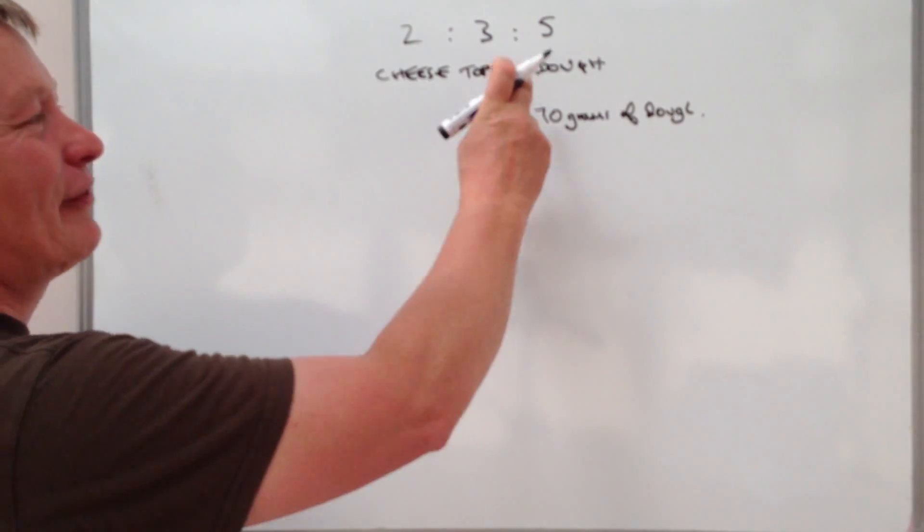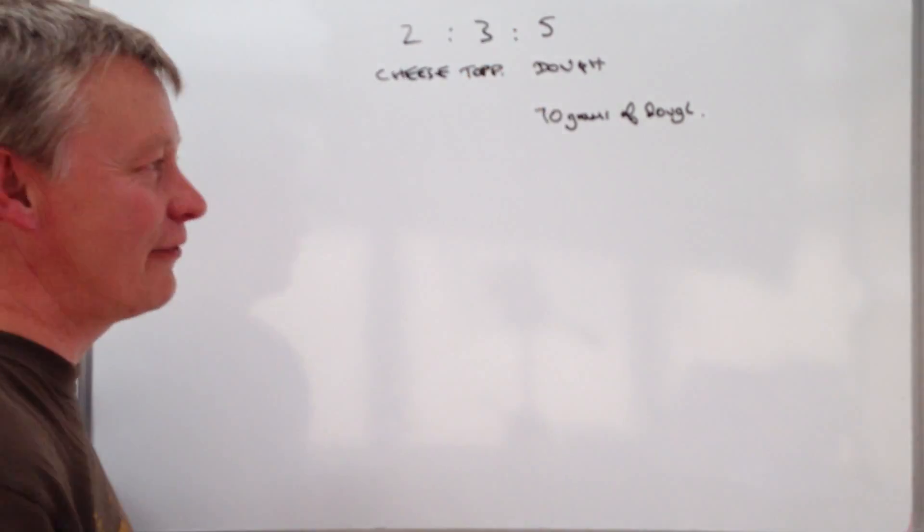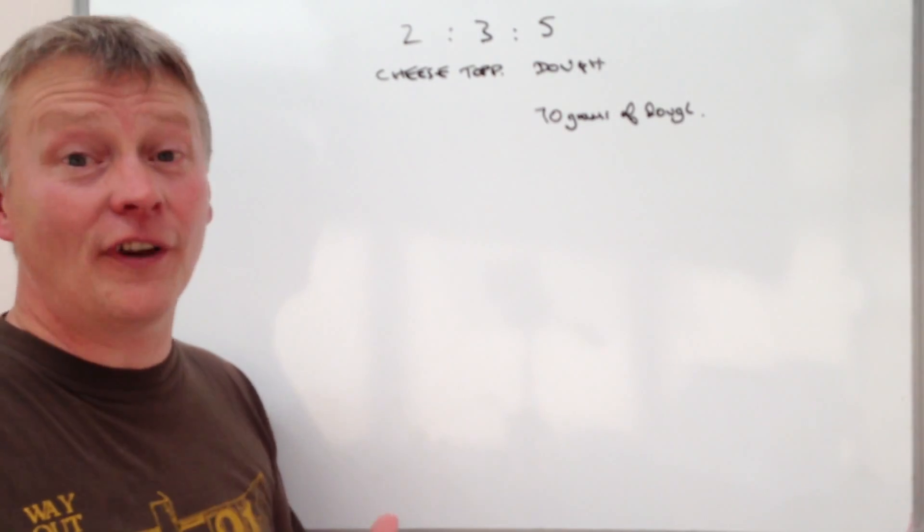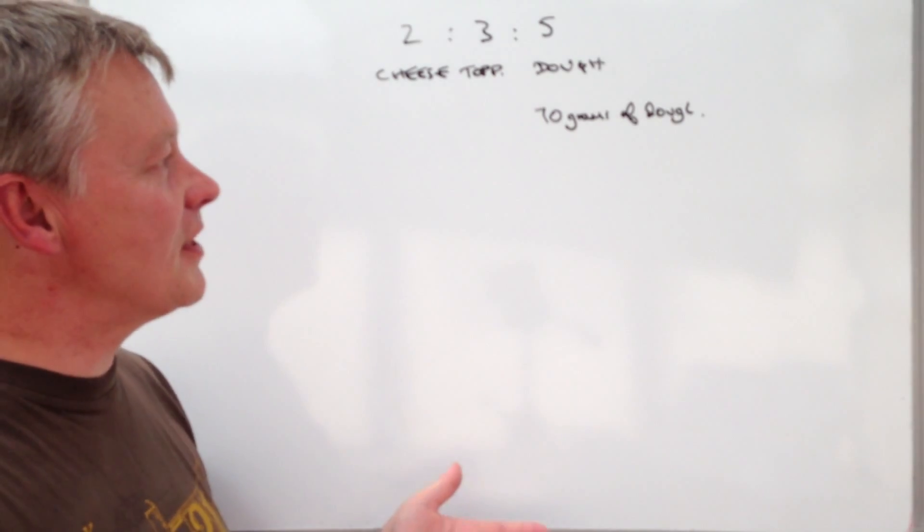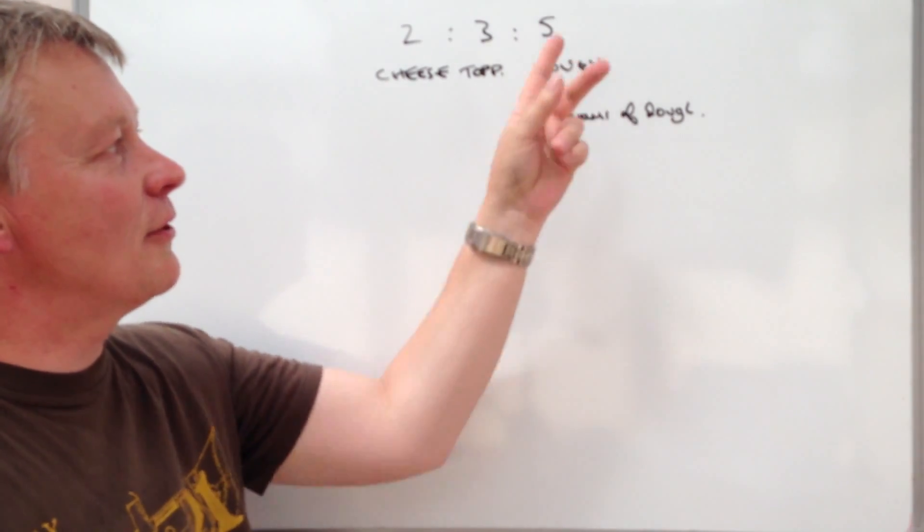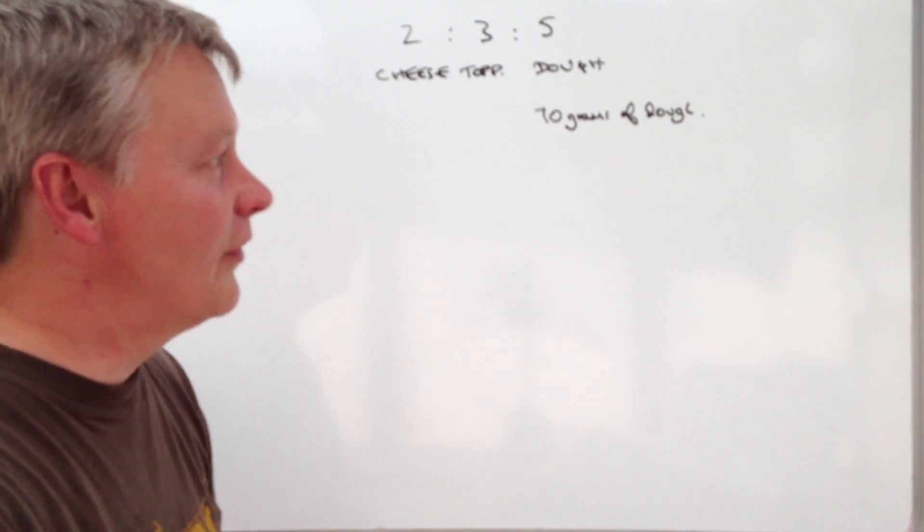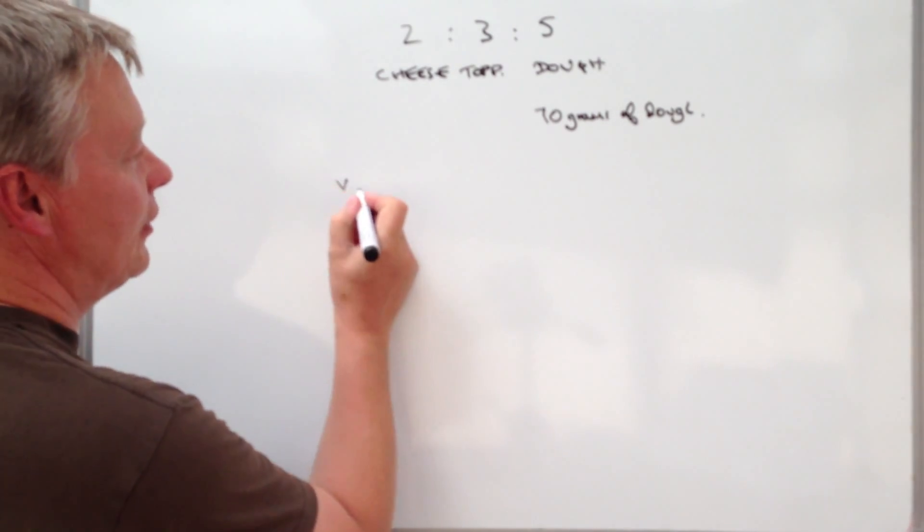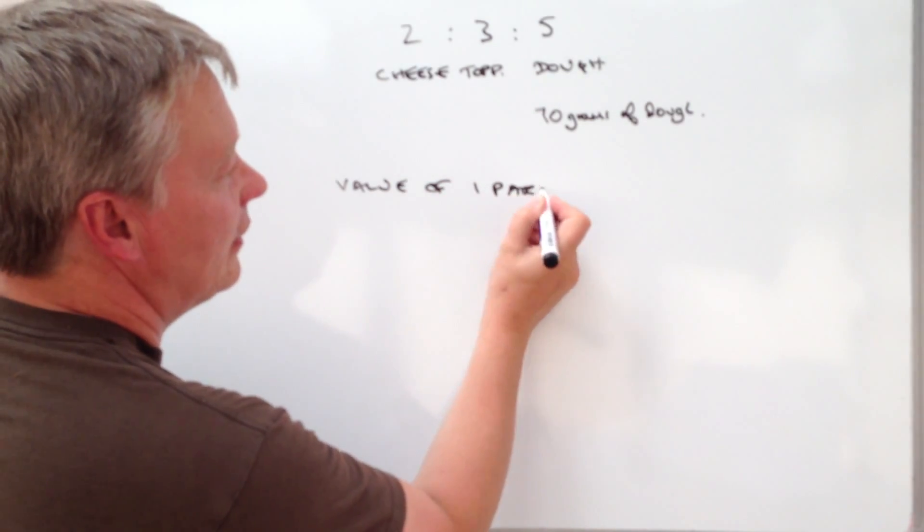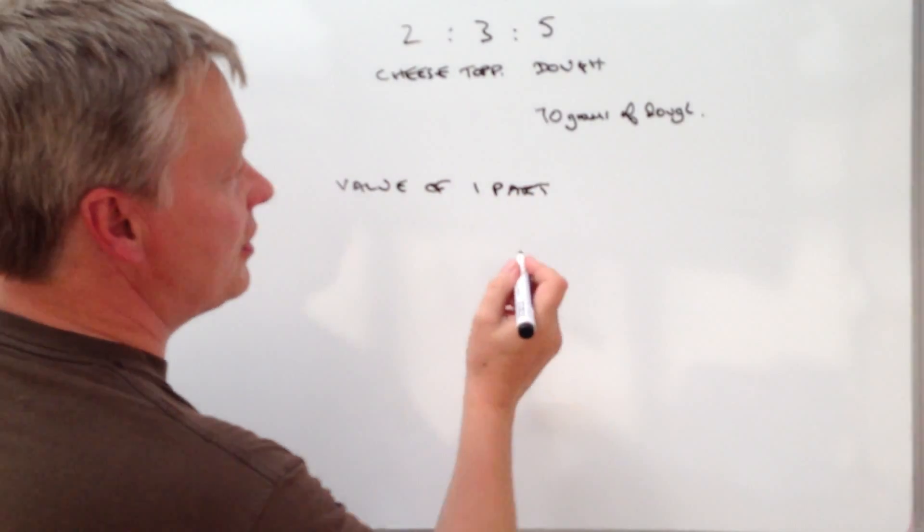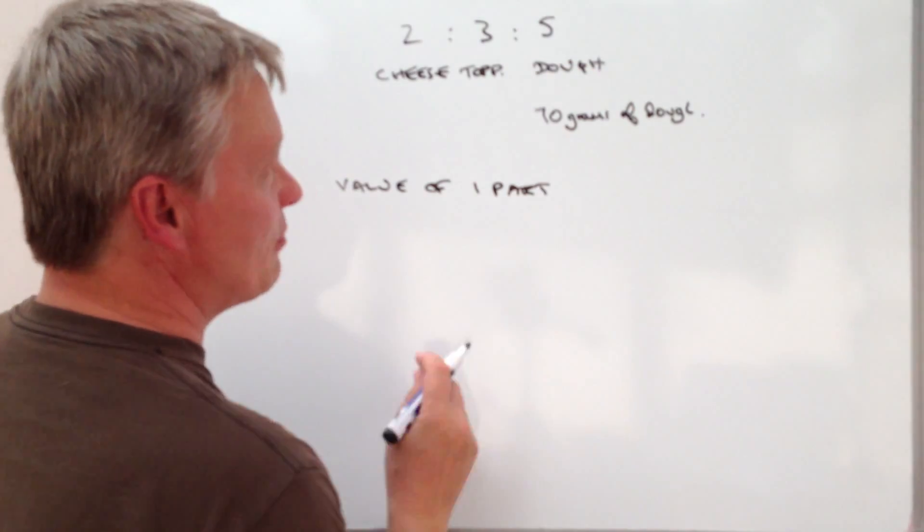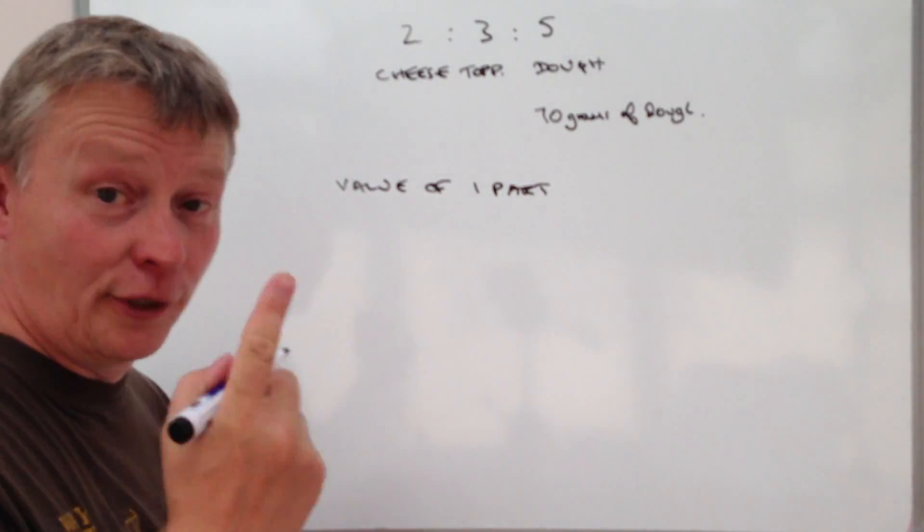So if it's the ratio of two, three to five, what I mentioned in the last video is that you need to find the value of one part. Well, the information we've got is that they use 70 grams of dough. If the ratio is five parts of dough, then to find the value of one part, all we need to do is divide 70 grams by five.